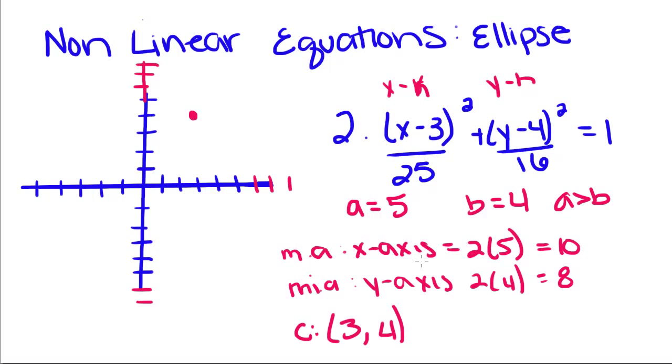So its major axis is going to go 5 to the right, 1, 2, 3, 4, 5. So 5 to the right and 5 to the left, so 1, 2, 3, 4, 5.